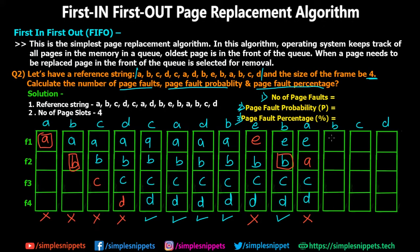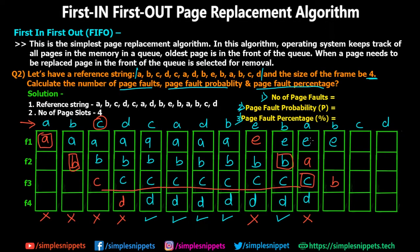Moving ahead, B is requested again, but we just replaced B in the previous step. So B must be brought back from virtual memory. According to FIFO, after A and B, C was the next page loaded into frames. C has been there throughout all these steps, so C is replaced and B is loaded. E, A, D remain as is. This is again a page fault.